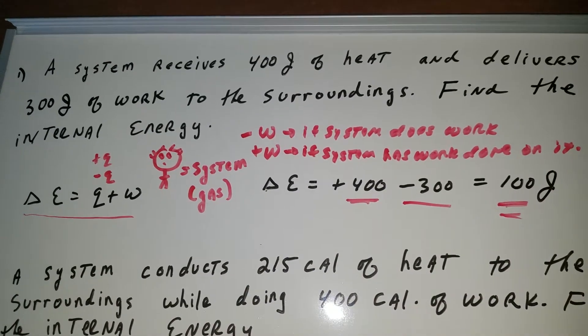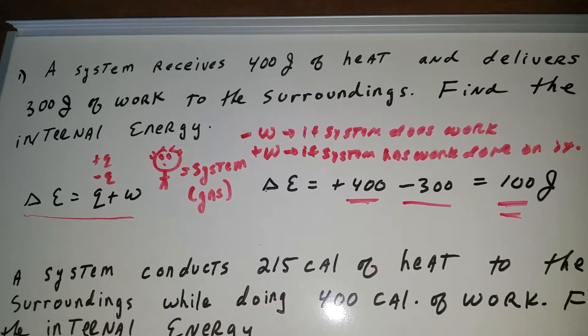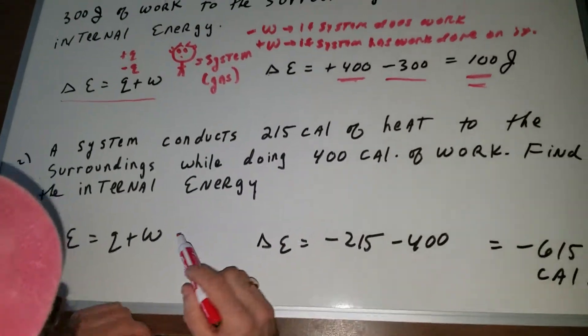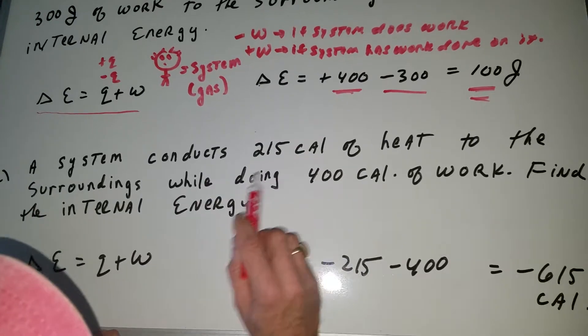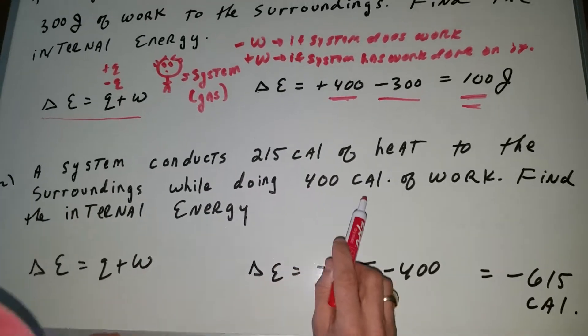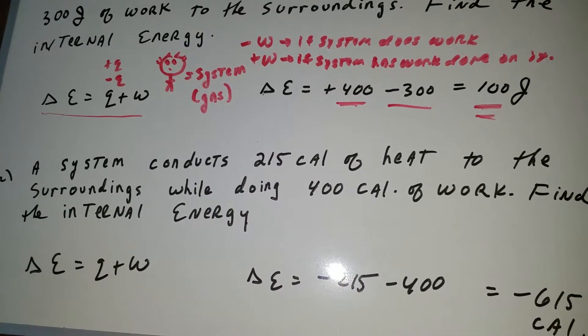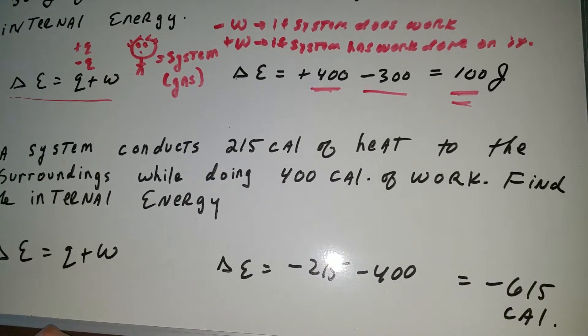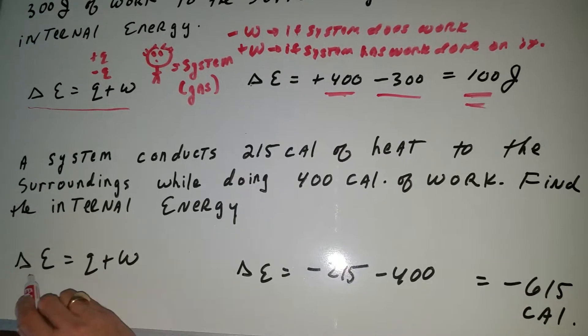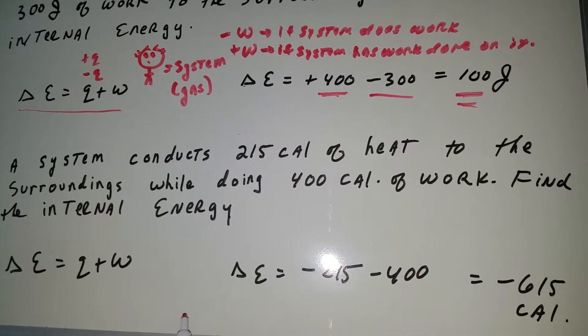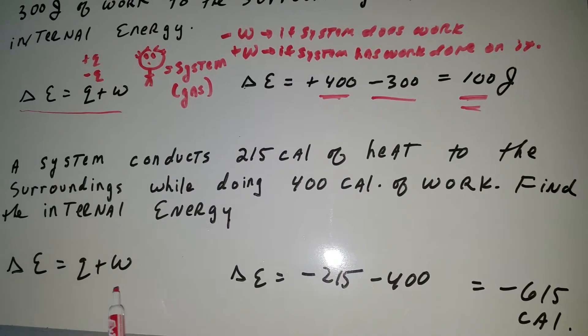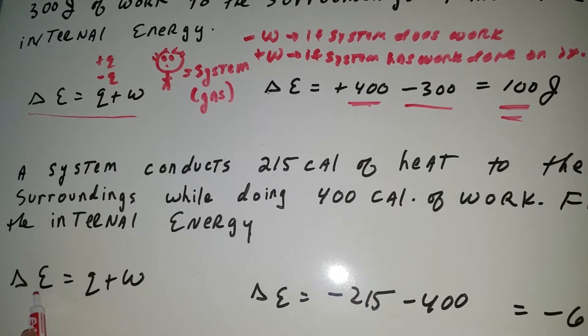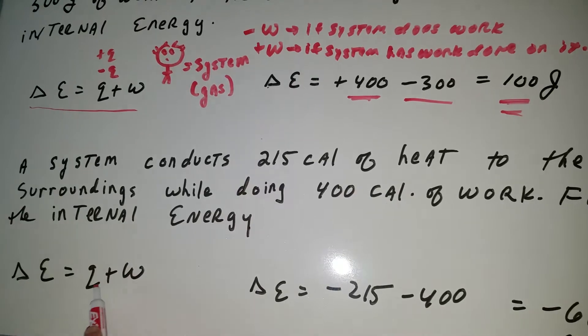Let's try one more. It says that a system, now that system could be a gas, conducts 215 calories of heat to the surroundings while doing 400 calories of work. Find the internal energy. Again, up goes the formula, delta E equals Q plus W. Notice that delta E is called a state function where these two are not state functions.